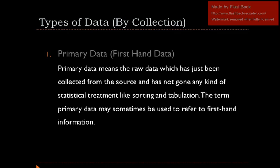The second part of primary data is that it has not gone through any kind of statistical treatment. In the first lecture, we discussed that data can be arranged, organized, or summarized. Here, primary data has not gone through any statistical treatment like sorting. This was our definition of primary data.